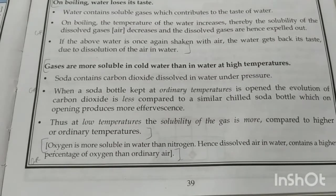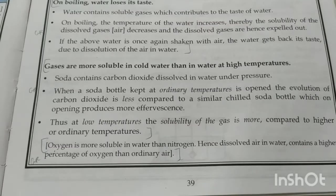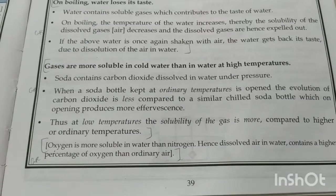Different gases have different solubility in water — oxygen is more soluble than nitrogen. That's why the percentage of oxygen in air dissolved in water (around 33%) is higher than its percentage in the normal atmosphere (around 21%). Nitrogen's percentage in dissolved water is about 66%, even though it accounts for about 78% of atmospheric air.